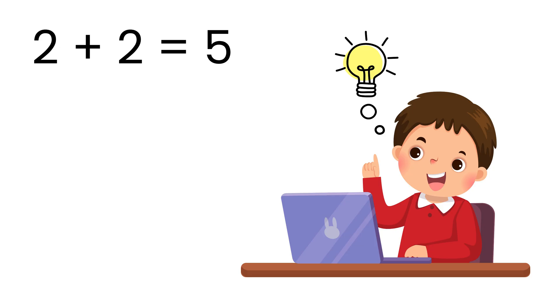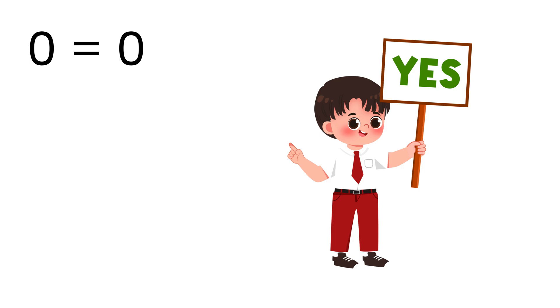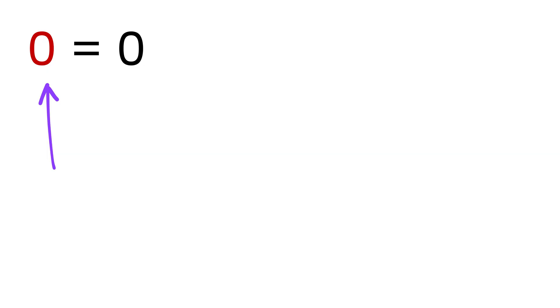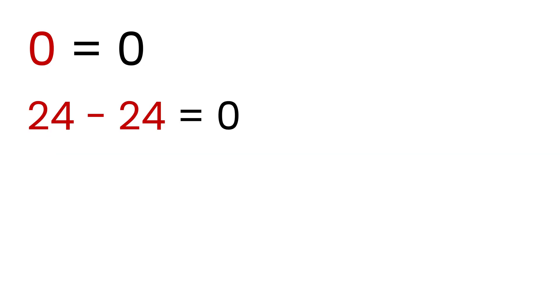First of all, we will start with something that we all know, and that is: if I take 0 on the left-hand side, then it must be equal to 0 on the right-hand side. You all agree with me on this? Now we can rewrite this 0 on the left-hand side as 24 minus 24, because 24 minus 24 is 0.